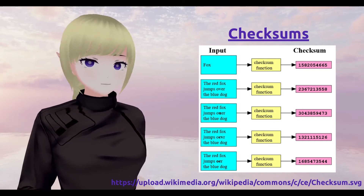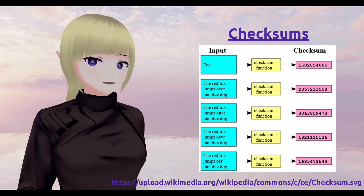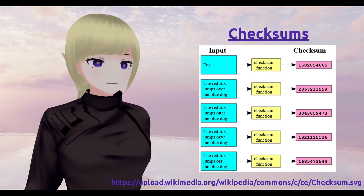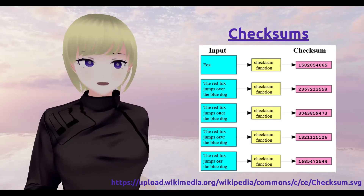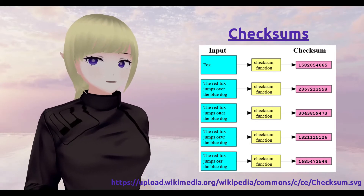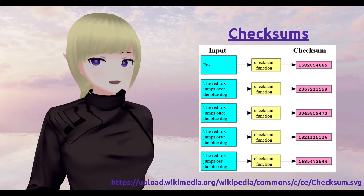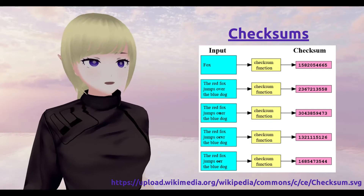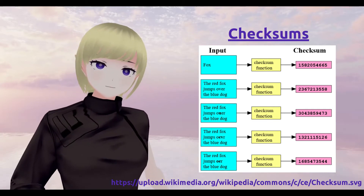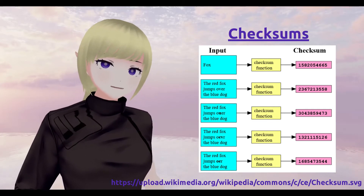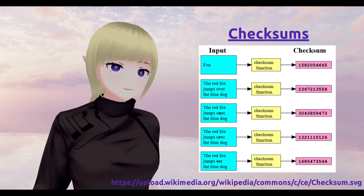If the algorithm outputs a different checksum value than the one that you originally recorded when you saved your data, you know that the data that you're looking at has been modified in some way or otherwise corrupted since it was recorded with that original checksum value. But you don't know what was changed, unfortunately — you just know that a change happened.